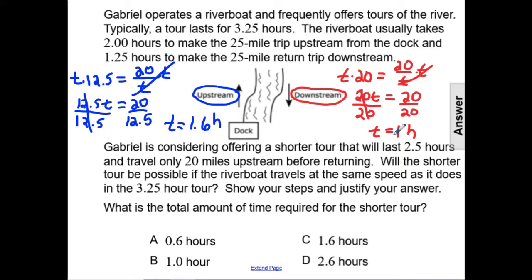It takes 1.6 hours to go upstream and 1 hour to go downstream. So, the total would be to add the two. 1.6 plus 1 would be a total of 2.6 hours for the shorter tour, which is answer choice D.